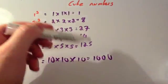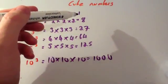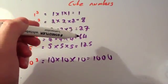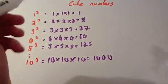Now these are cube numbers, your answers. So the cube numbers are 1, 8, 27, 64, 125. And they carry on.